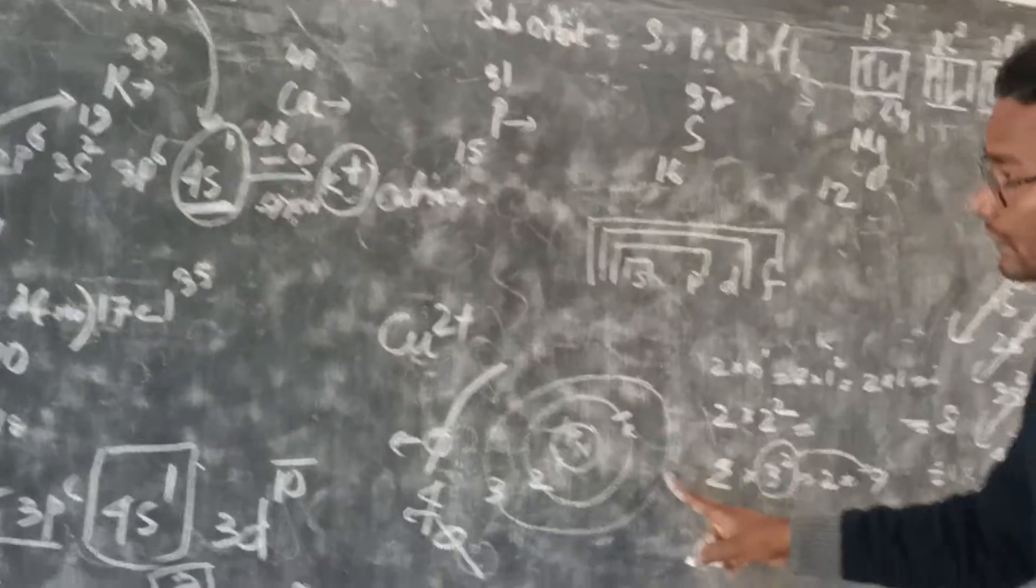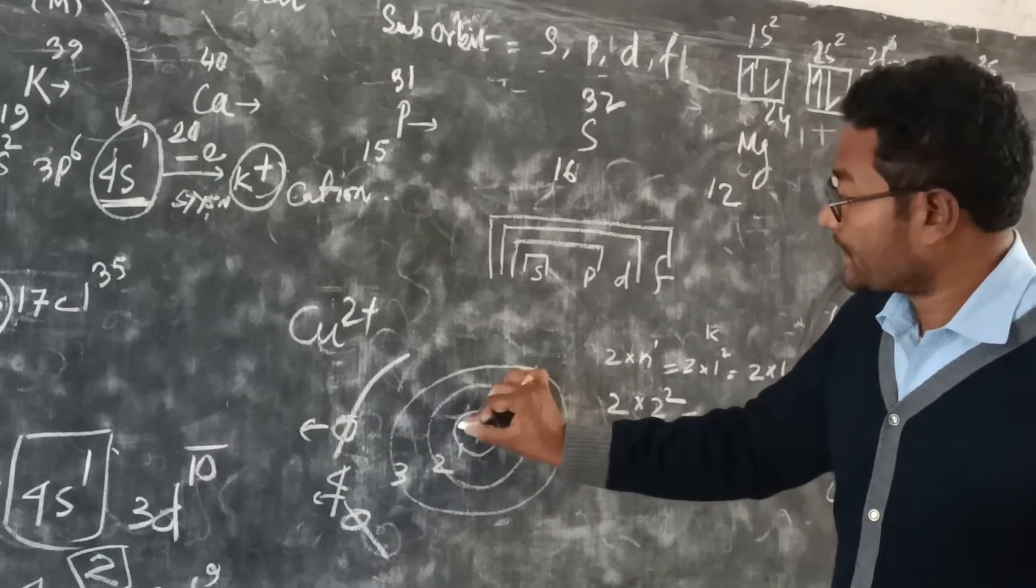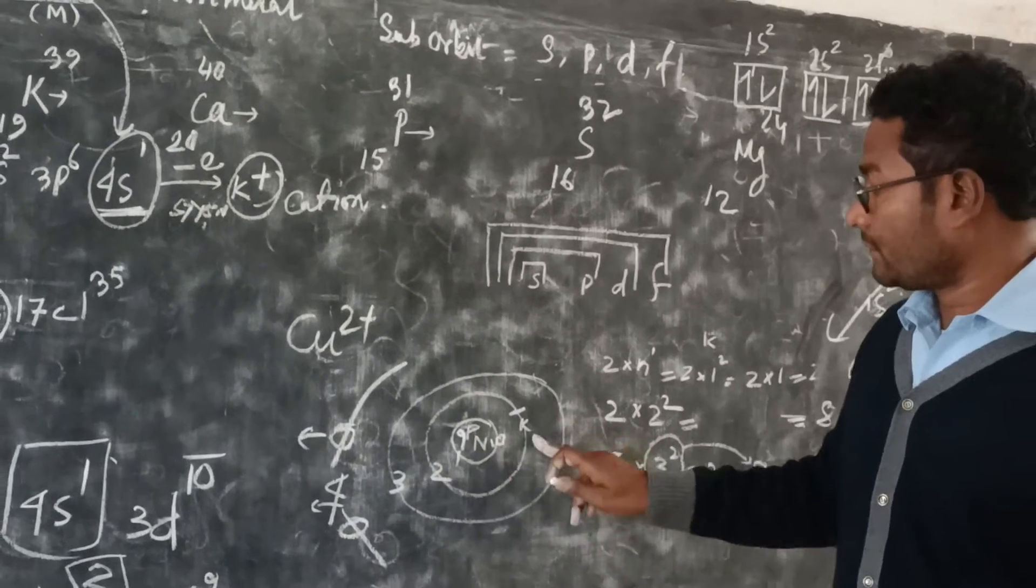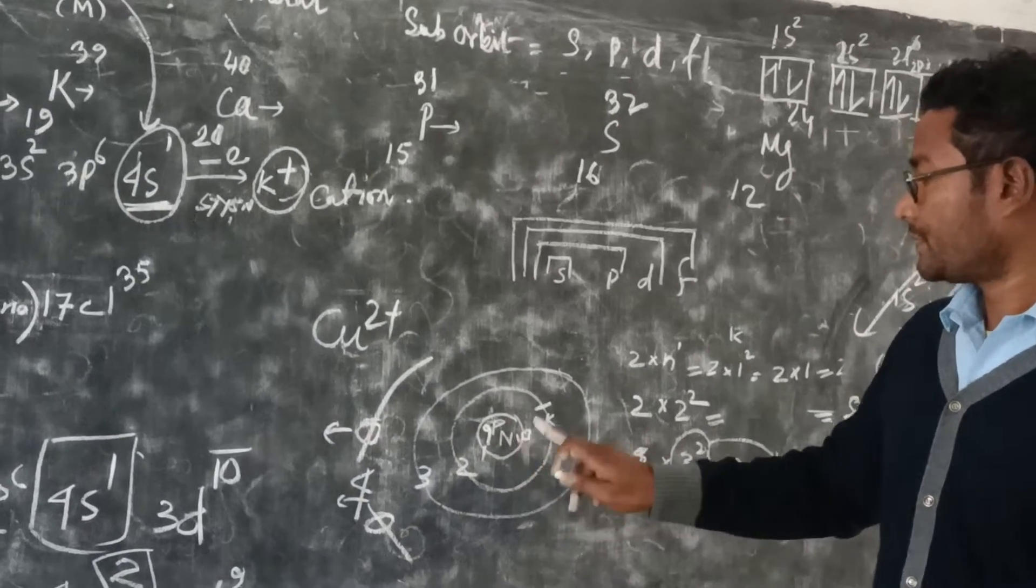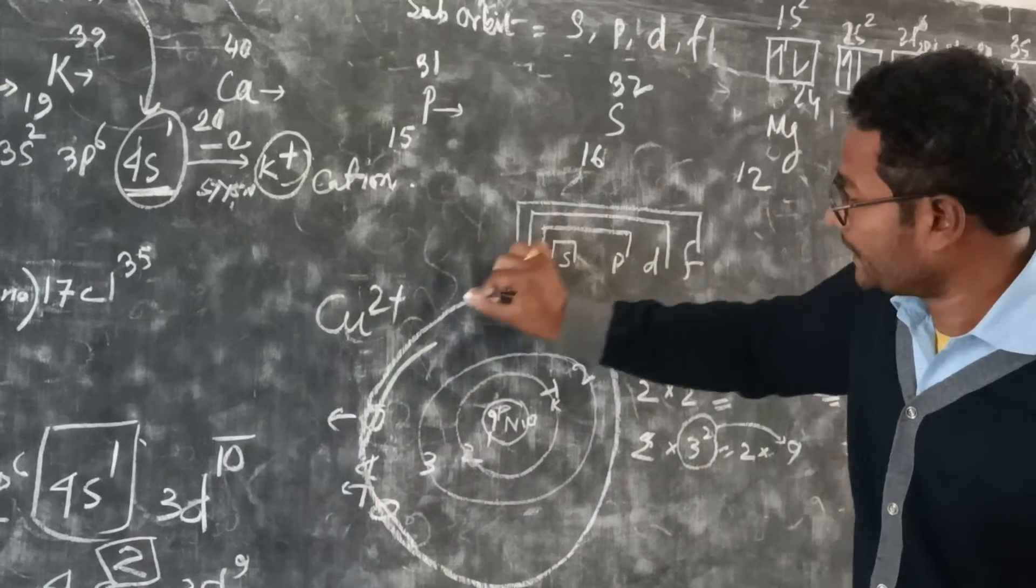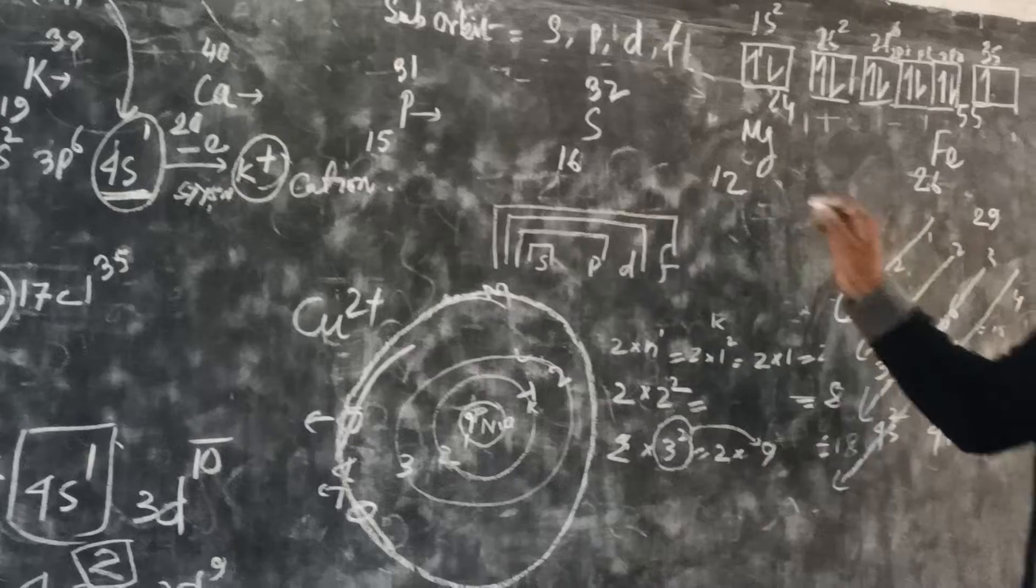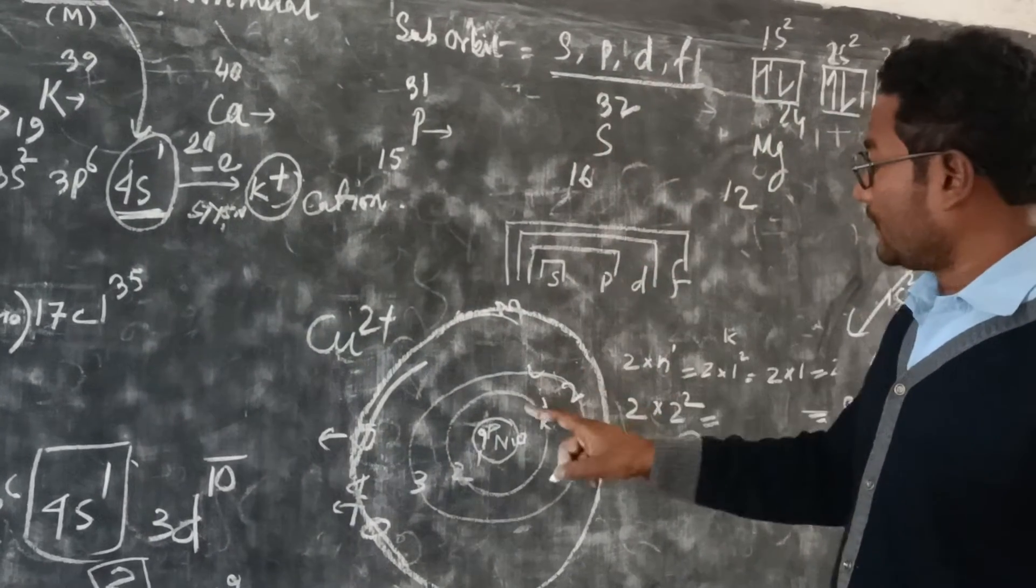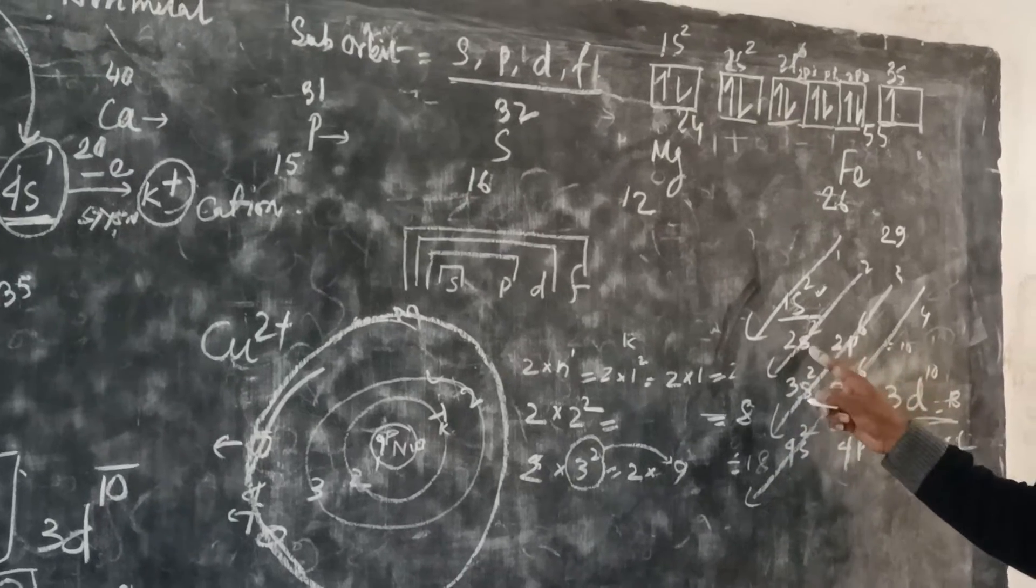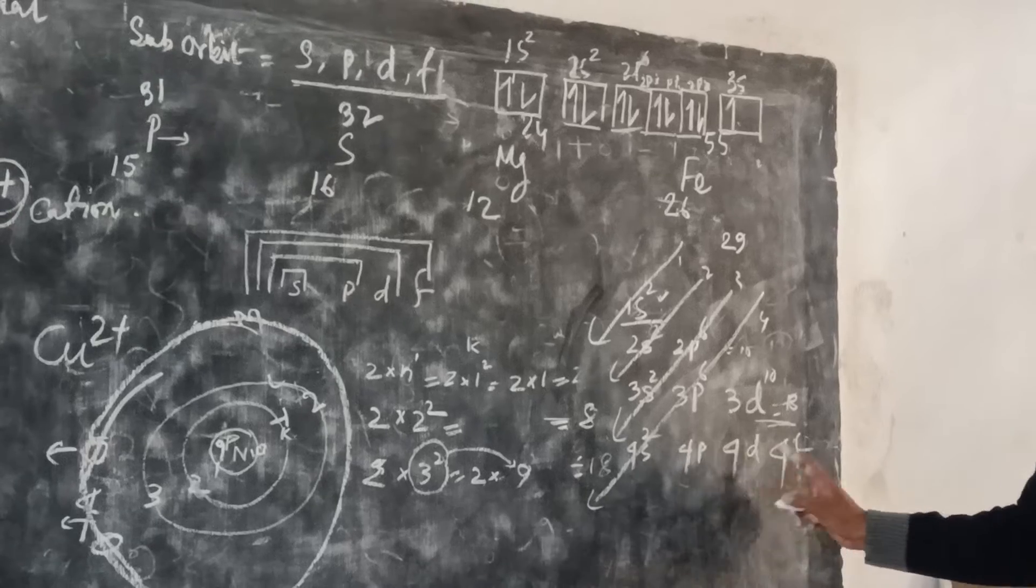These are the orbits for fluorine. Neutrons and protons, that is 10 and 9, will be in the nucleus. There's first orbit, second orbit, third orbit. Within each orbit, there are sub-orbitals. In the second orbit there are two sub-orbitals: one is s, another is p. In third: s, p, d. And fourth: s, p, d, f.